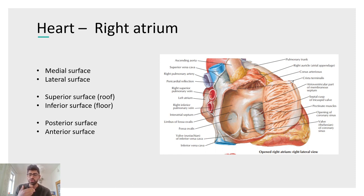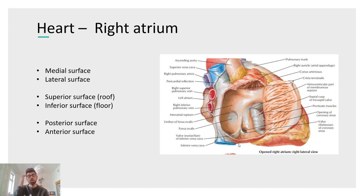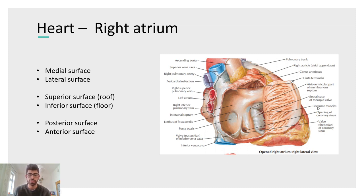To orientate yourself in this scheme: we're looking at the posterior wall, with the ventral surface visible in the background. On the medial surface, the key structure is the fossa ovalis — an embryological remnant of the foramen ovale. Bordering the fossa ovalis superiorly is a thickening called the limbus fossae ovalis. The crista terminalis is on the lateral side.